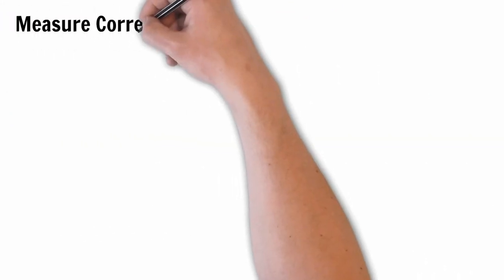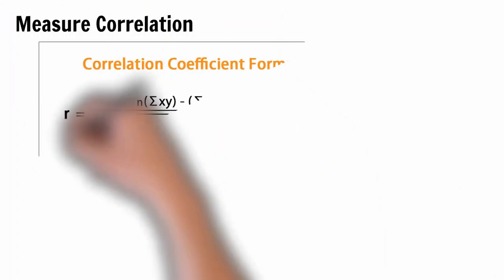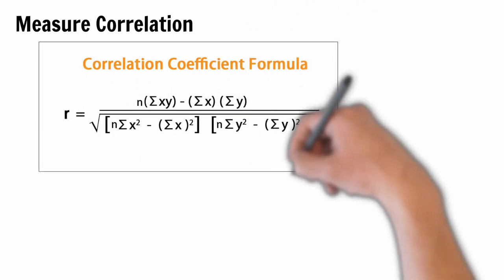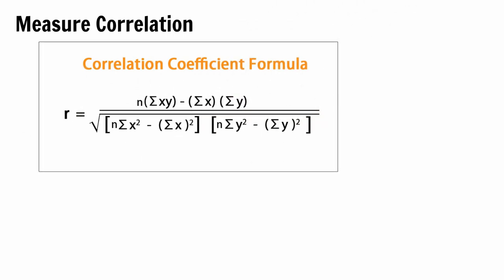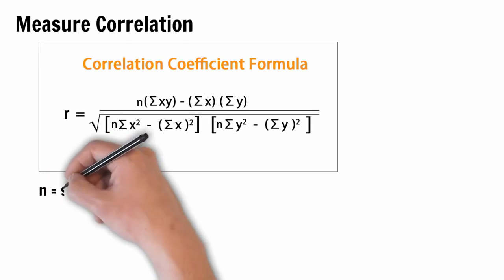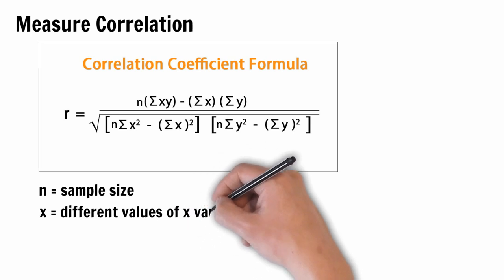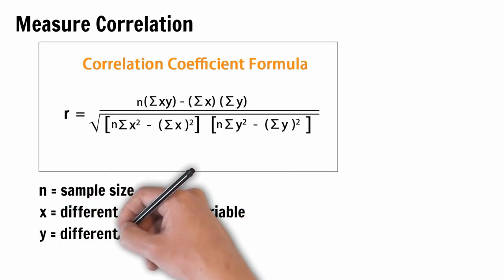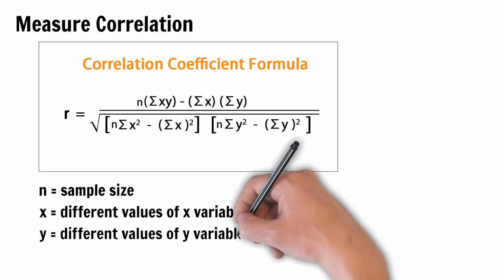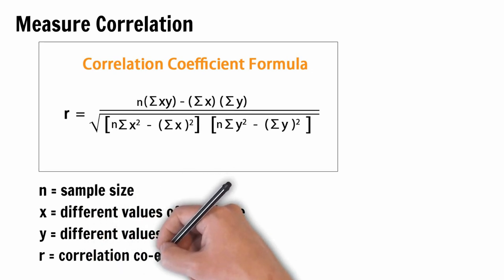We can measure correlation with the help of correlation coefficient. The formula is as such. This is the Pearson's correlation coefficient. There are other metrics called Kendall's correlation coefficient and the Spearman's correlation coefficient. For this tutorial we will stick to Pearson's formula. Here n is the sample size or number of data points, x refers to different values taken by the x variable, y refers to different values taken by the y variable, and r is the correlation coefficient.